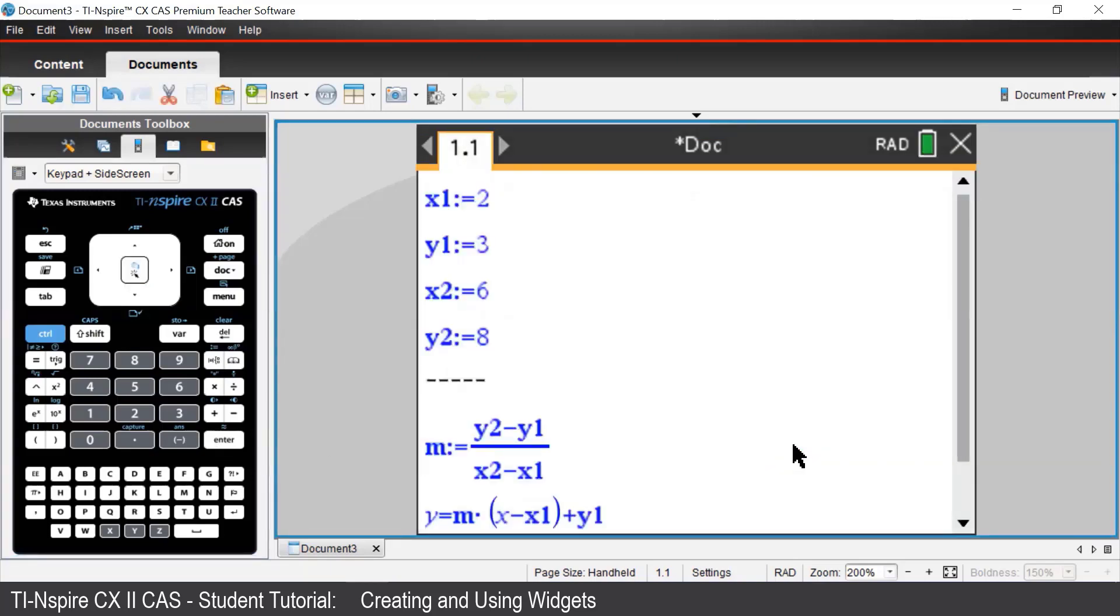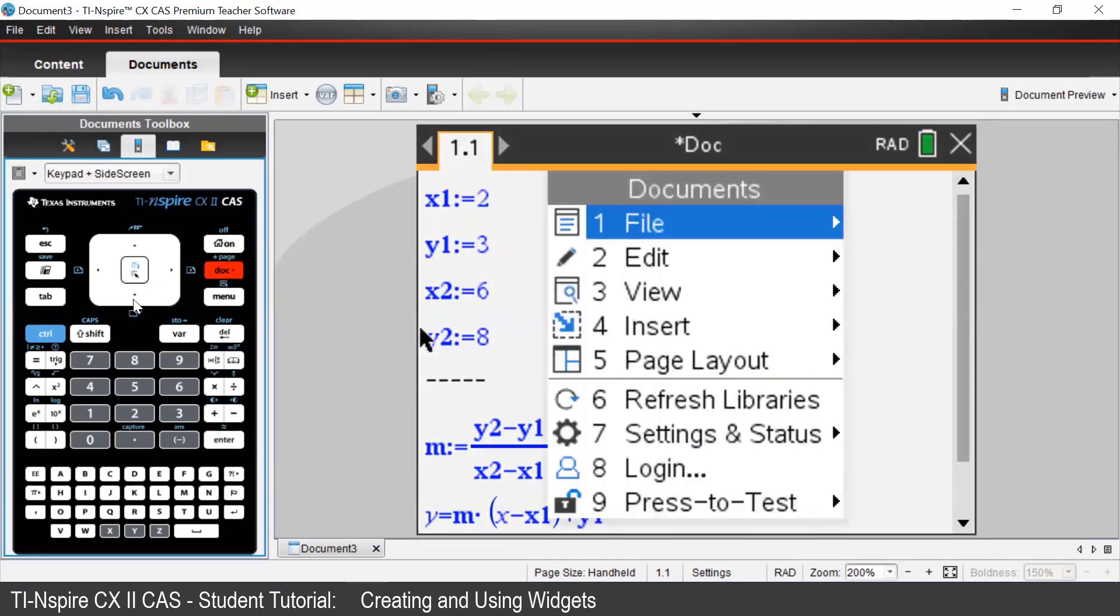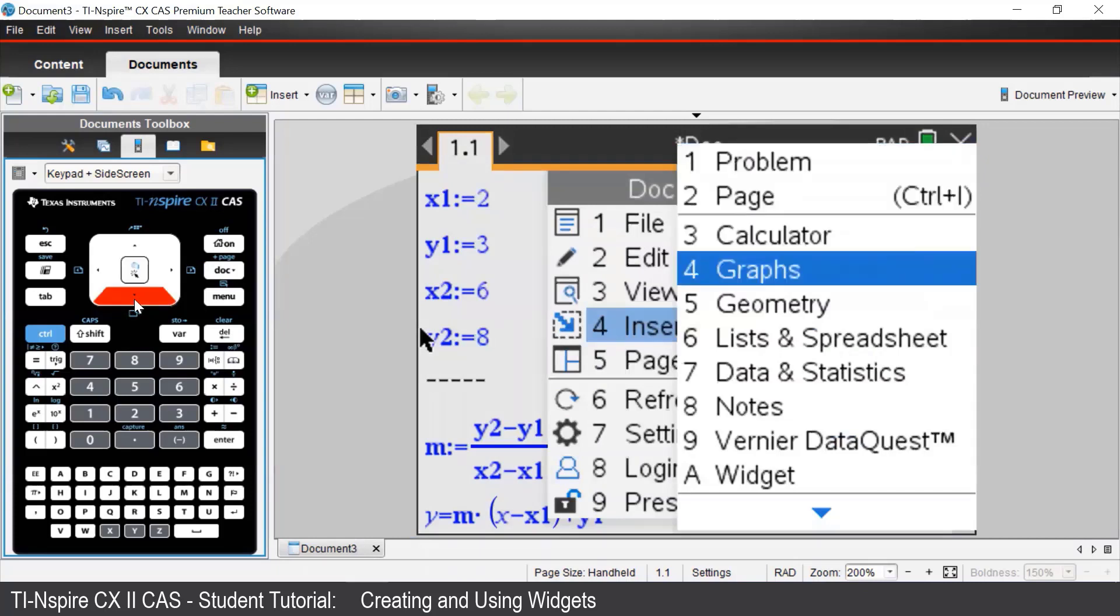If we were already in a document, we can press the dot button, select insert, and then we can select widget from there.